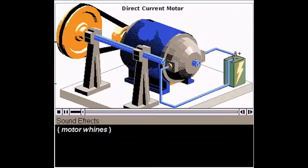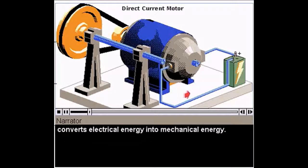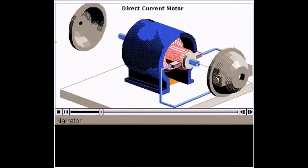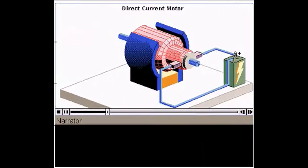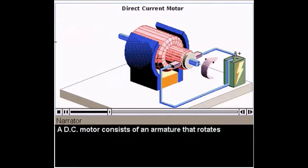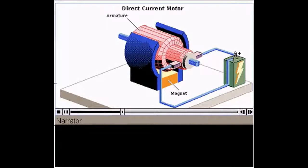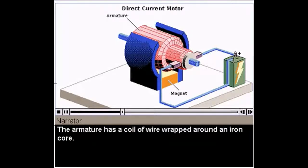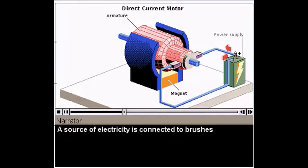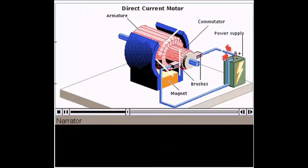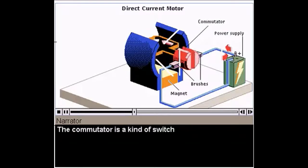An electric motor converts electrical energy into mechanical energy. A DC motor uses direct current electricity that flows continuously in only one direction around a circuit. A DC motor consists of an armature that rotates within a magnetic field. The armature has a coil of wire wrapped around an iron core. A source of electricity is connected to brushes, which make contact with the commutator on the armature. The commutator is a kind of switch that changes the direction of current flow in the coil as it turns.